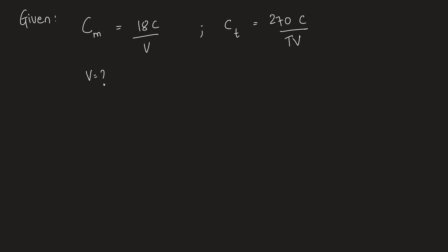Now we have to calculate the cutting speed V such that total cost is minimum. Total cost is nothing but CM + CT. The tool life equation is also given: VT^0.25 = 150. After substituting the given values, we have 18C/V plus 270C/(TV).